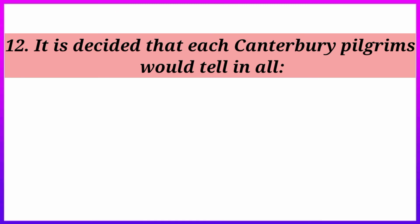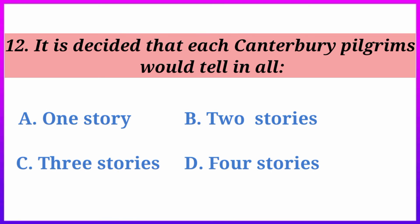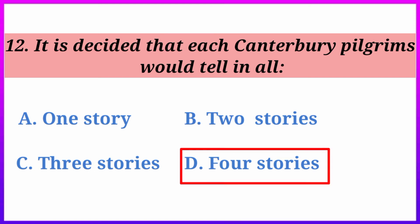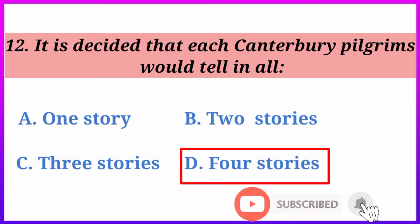Next: it is decided that each Canterbury pilgrim would tell in total how many stories? One story, two stories, three stories, or four stories. The answer is four stories — two stories on the going journey and two on coming back.